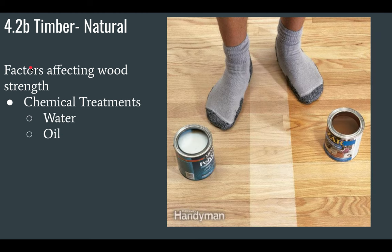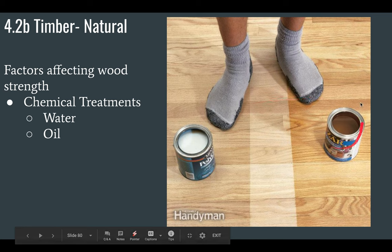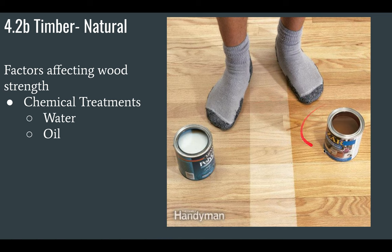To increase the strength of wood, you can treat it. Treatments include water-based chemical treatments, which soak into the wood, or oil-based treatments, which also soak into the wood.